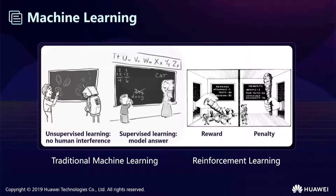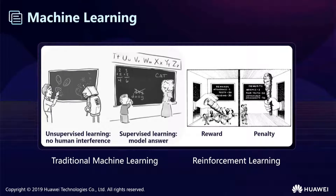Reinforced learning is applied to effective simulation environments that represent the real world — the model learns through continuous training, action simulation, and feedback receiving. Reinforced learning is a feedback system, and it can be modified at any time. For example, if students perform well, we reward them with ice cream; if not, we punish them. That's the basic idea of reinforced learning.